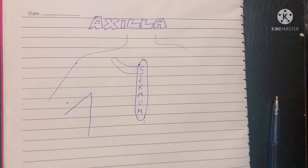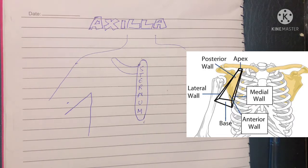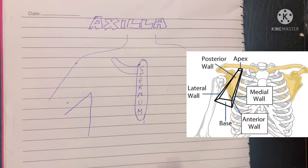Assalamu alaikum, this is Dr. Hasna, and today's topic is the axilla. First, let's define what axilla is. In layman terms, it's also called the armpit, and it's defined as the space located between the upper part of the chest and your arm.